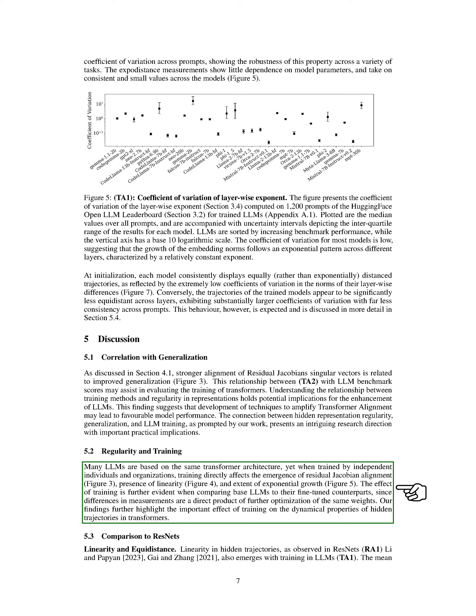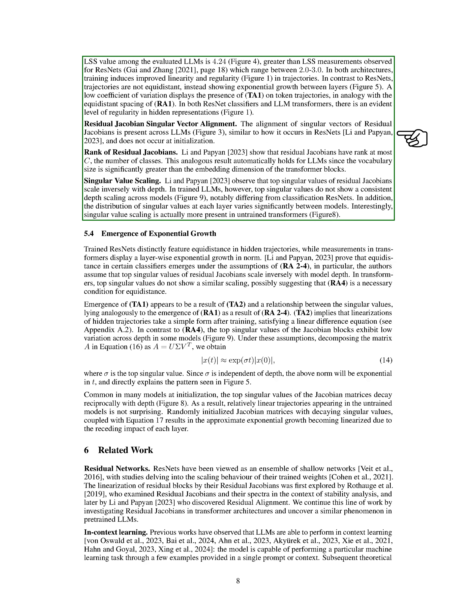Fine-tuning LLMs further enhances these properties due to the optimization of the same weights. Training plays a crucial role in shaping the dynamic characteristics of hidden trajectories in transformers. Comparing LLMs to ResNets, we observe that training leads to improved linearity and regularity in both architectures. While ResNets exhibit equidistant trajectories, LLMs show layer-wise exponential growth instead. The top singular values of residual Jacobians scale inversely with depth in ResNets, leading to equidistant trajectories; however, this scaling pattern is not consistently observed in trained LLMs, suggesting a different behavior in transformers.